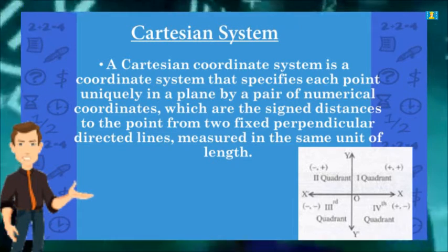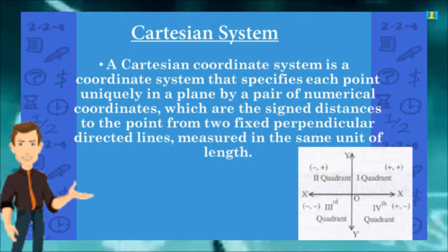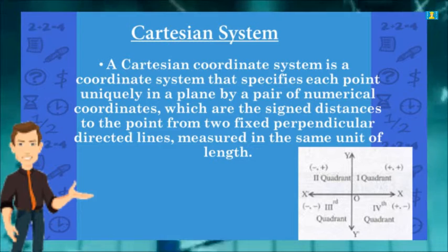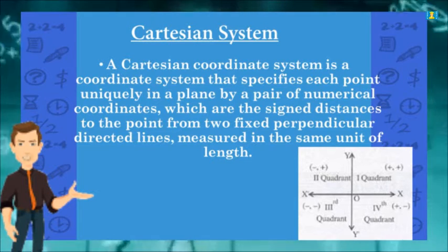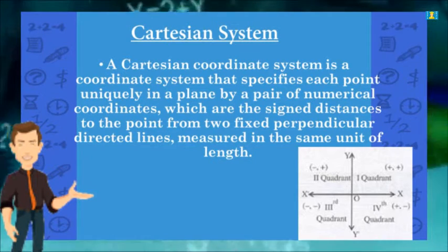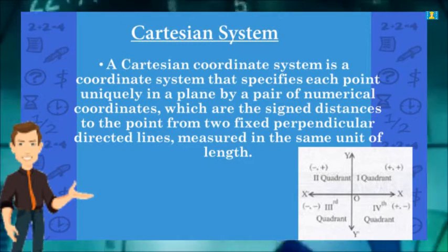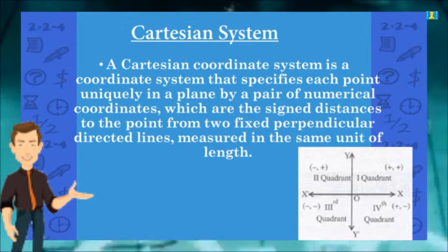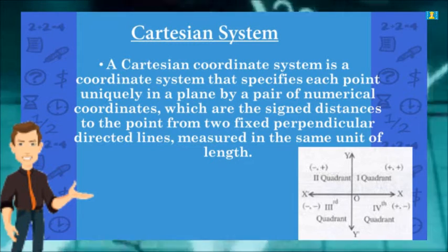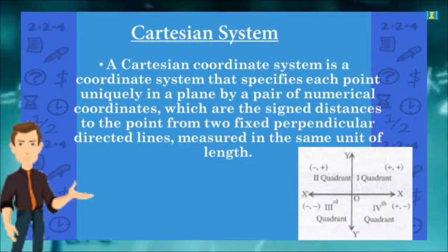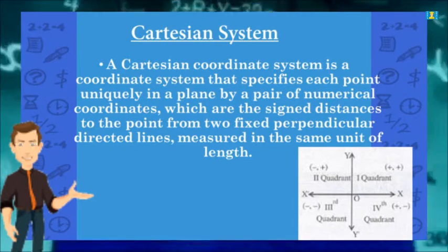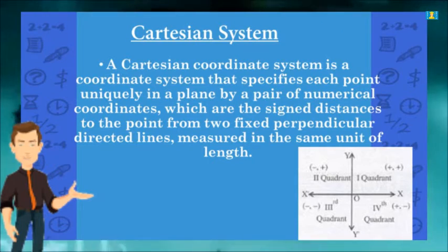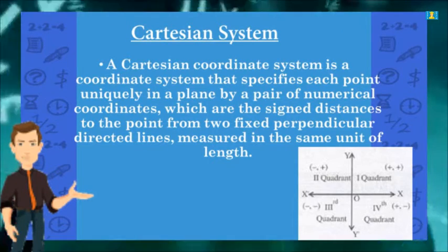The axes intersect at the origin, which is the point (0, 0). A Cartesian coordinate system is a coordinate system that specifies each point uniquely in a plane by a pair of numerical coordinates, which are the signed distances to the point from two fixed perpendicular directed lines, measured in the same unit of length.